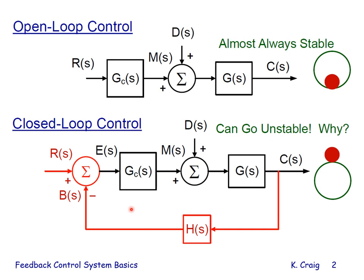There are many other benefits to feedback control, but comparing open-loop control to feedback control, we see two main differences. In the open-loop control system, the control variable is not measured. In the closed-loop control system, the controlled variable is measured, and the output of the feedback element is compared to the reference input. Based on that difference, we take action via the controller G sub C.